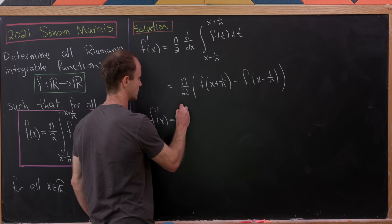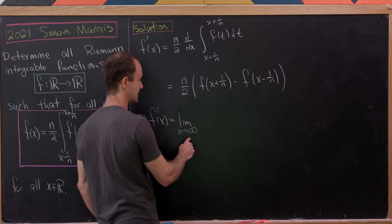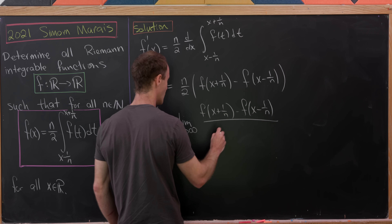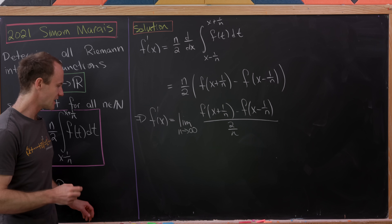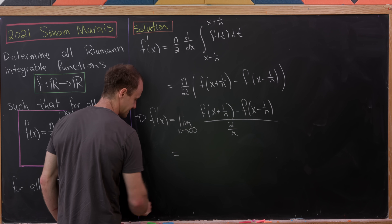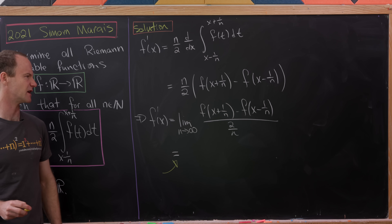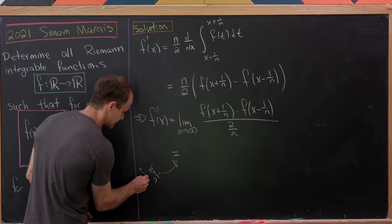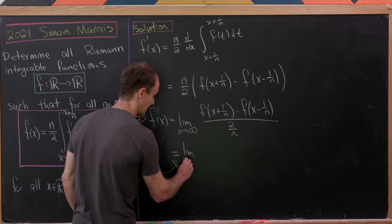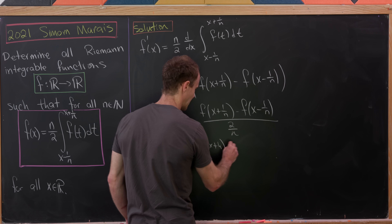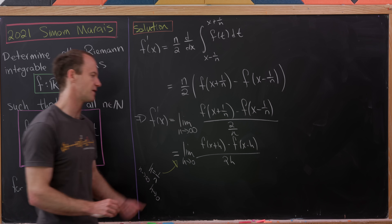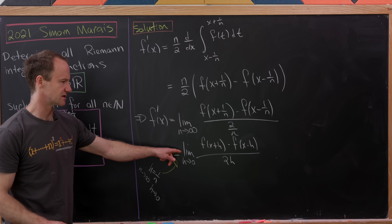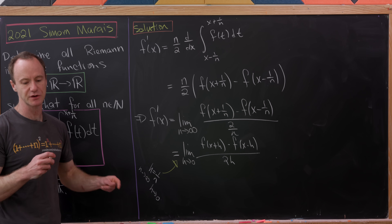So f prime equals the limit as n goes to infinity of f of x plus 1 over n minus f of x minus 1 over n, all over 2 over n. Setting h equal to 1 over n, as n goes to infinity h goes to 0, so this becomes the limit as h goes to 0 of f of x plus h minus f of x minus h over 2h. That's the symmetric difference formula for the derivative, and since we know this limit equals f prime, everything checks out.